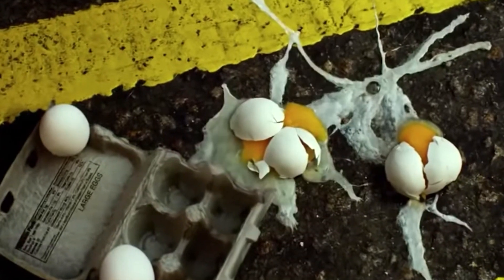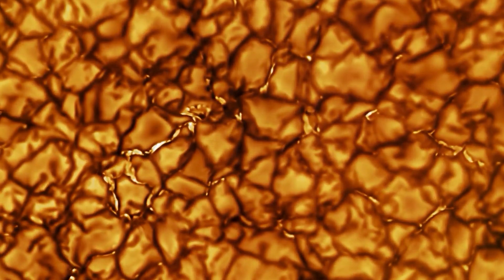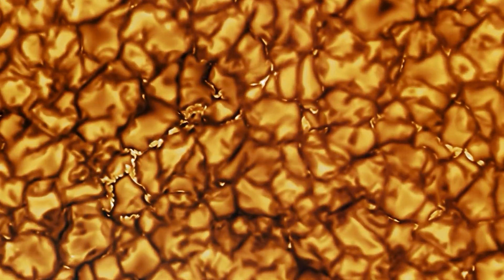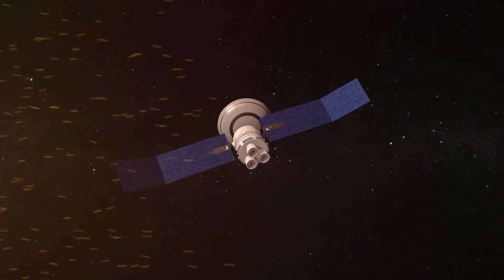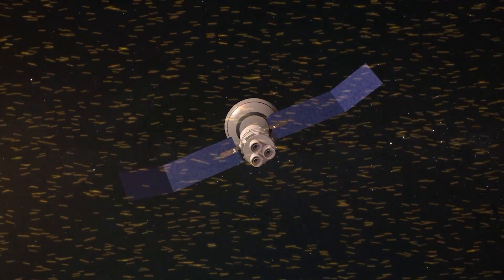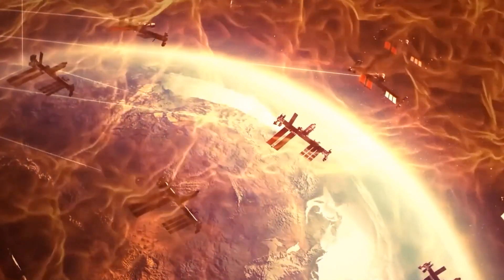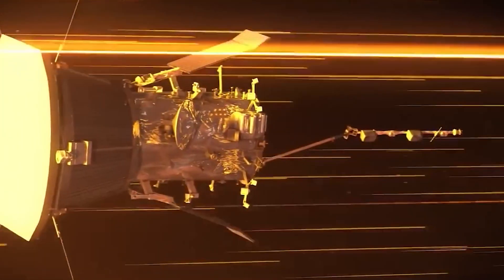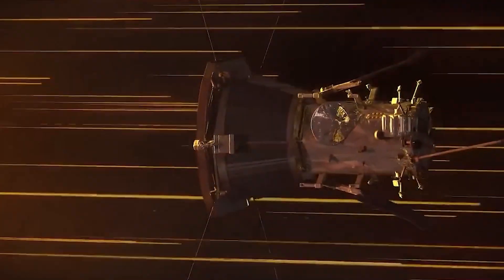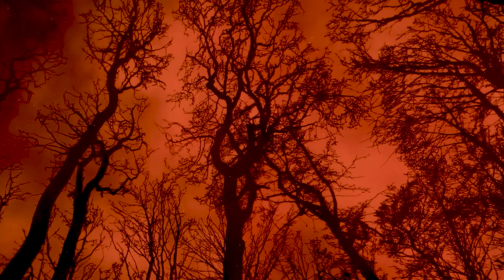However, it's also a period when disruptions to GPS and radio signals occur. The heating of the atmosphere causes it to expand, similar to a marshmallow puffing up. This expansion introduces more drag on satellites in low orbit, effectively pushing them back towards the Earth's surface. Additionally, the disturbance can alter the courses of small fragments of space debris, creating potential hazards in orbit.